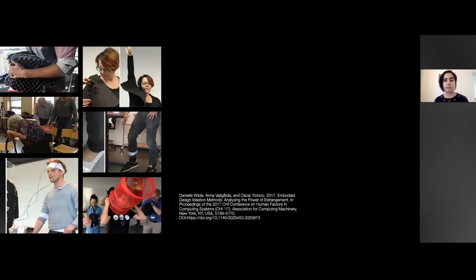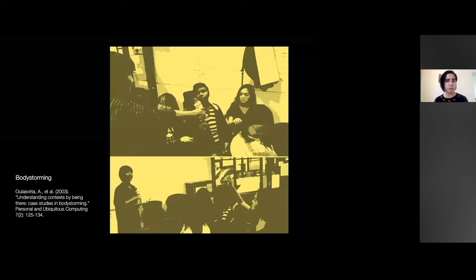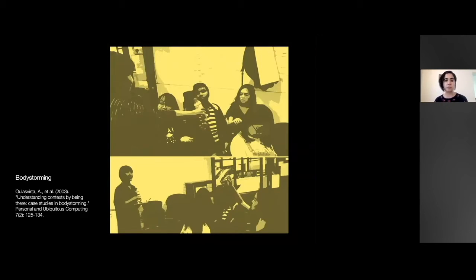Here I have another example by Daniel Wilde and his team, Anna Baccouche and Oscar Tomico. They ran a series of workshops, and this one was the last one I think - embodied design ideation methods, analyzing the power of estrangement. By defamiliarization I also mean estrangement, which is another way of naming this concept of making things strange. What they did was gather different design methods and start testing them out in order to envision new ways to design technologies closer to the body involving movements, that could be useful and take those aspects into account.